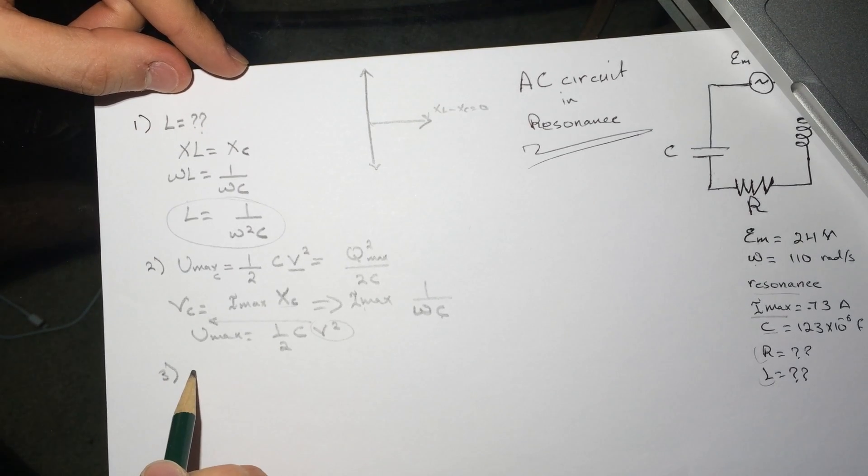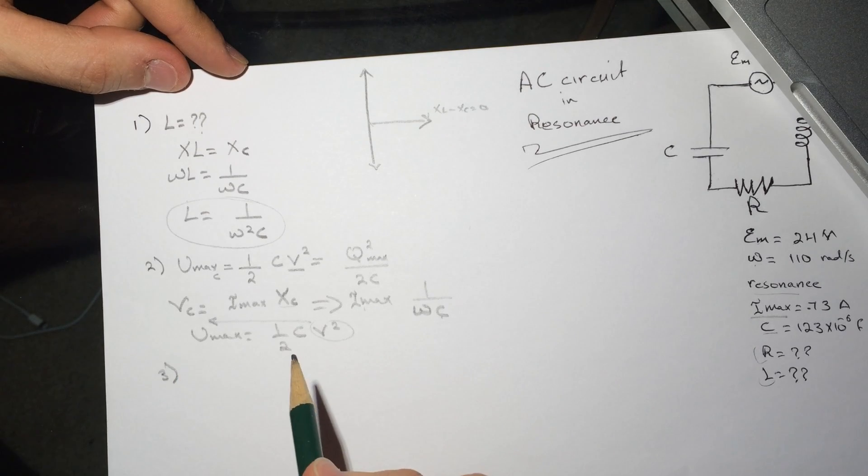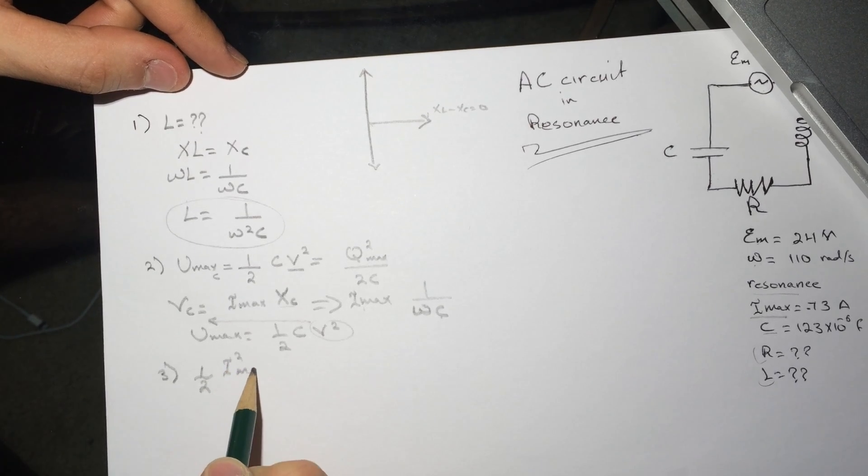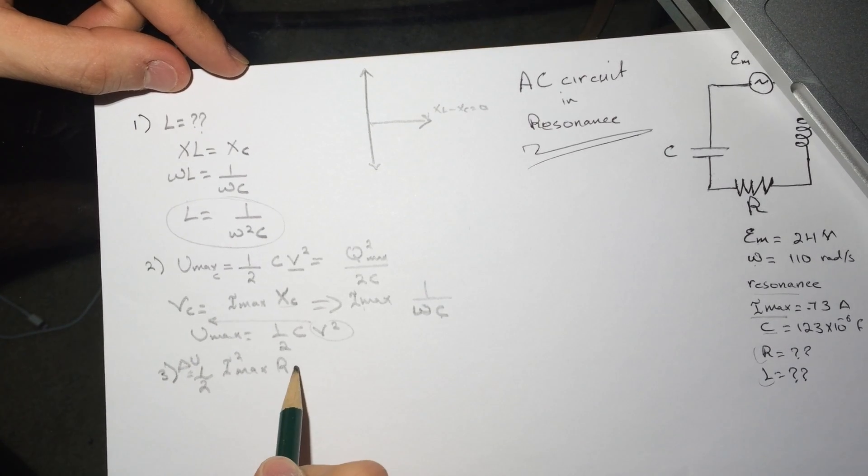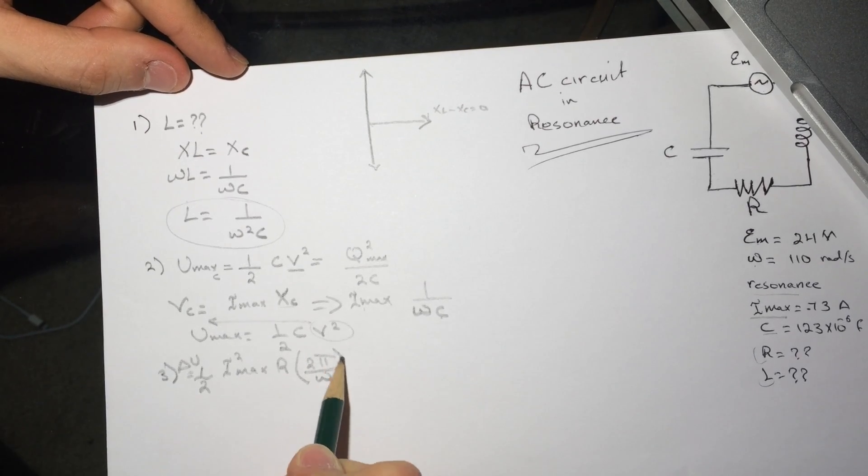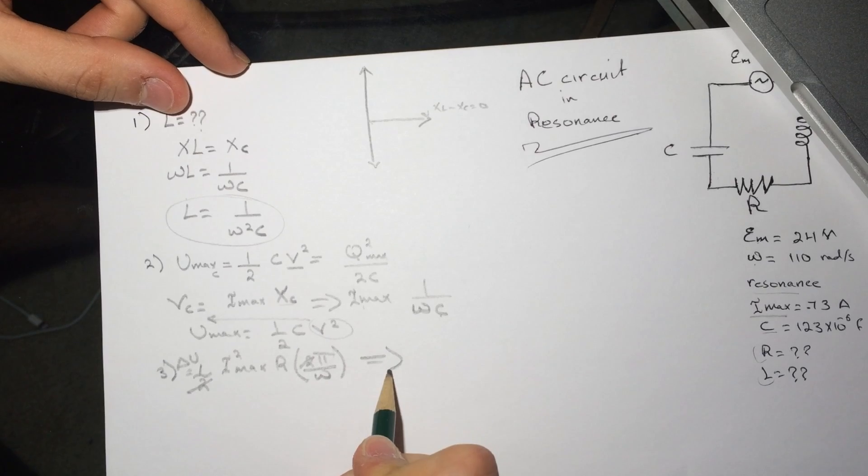Number three is asking for delta U, the total energy dissipated in the circuit in one cycle. The energy that's going to be lost will be in the resistor. So the energy in the resistor is half I squared max times R, and they want it in one cycle, so it's 2 pi over omega. This equals pi I squared max R over omega.